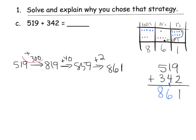And we know we added the correct amount because 300 plus 40 plus 2 is the 342. So we've got a variety of different methods, and they all, of course, lead to the same answer of 861.